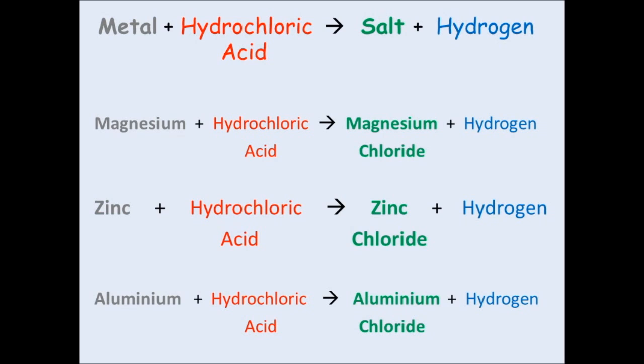So for instance, if you react magnesium with hydrochloric acid, we've already seen you get magnesium salt. Now because you've used hydrochloric acid, you get magnesium chloride. Also don't forget that you get hydrogen formed.